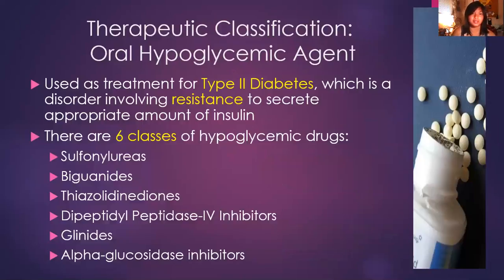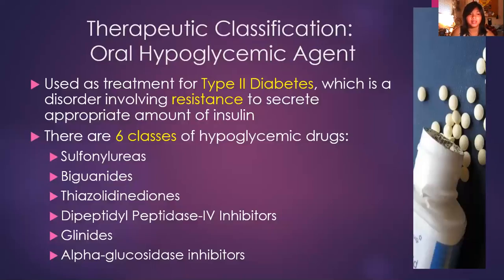Here's a slide about the therapeutic classification of oral hypoglycemic agents. It's used as treatment for type 2 diabetes, which is a disorder involving resistance to secreting appropriate amounts of insulin, so there is insulin circulating in the body, just not sufficient amounts, leading to high blood glucose levels in our patients. I also listed the six classes of hypoglycemic drugs, and we'll be going into sulfonylureas throughout my presentation.